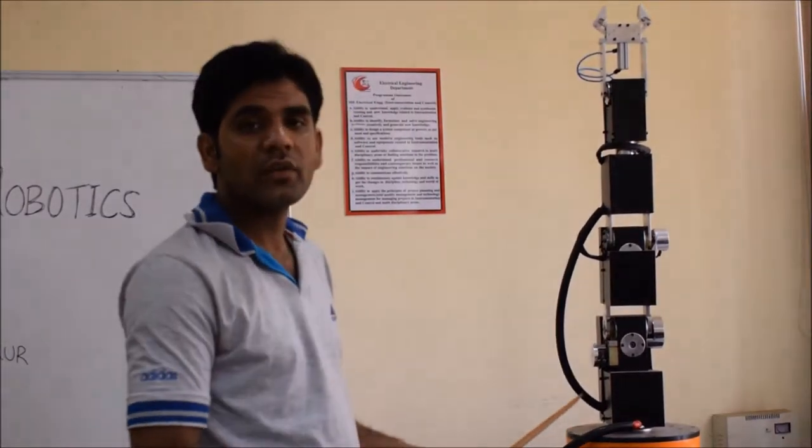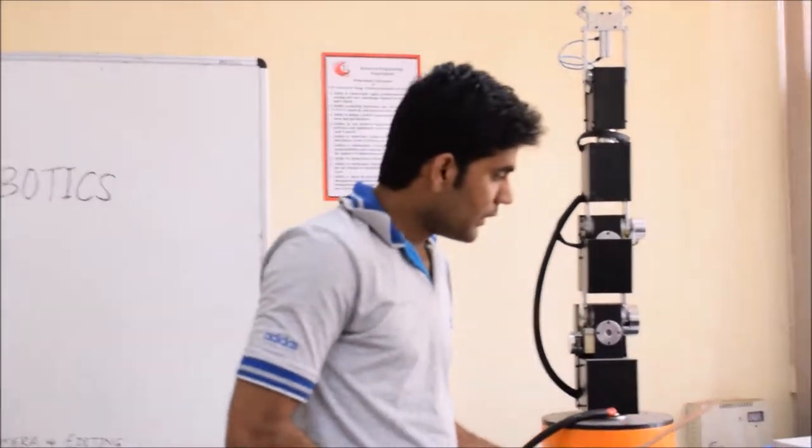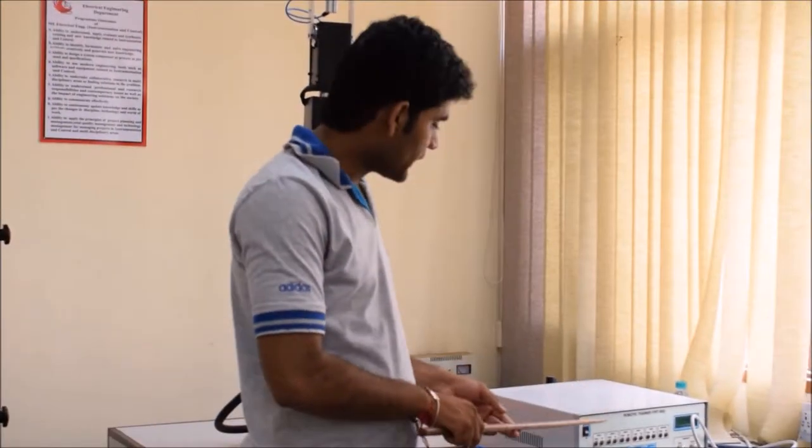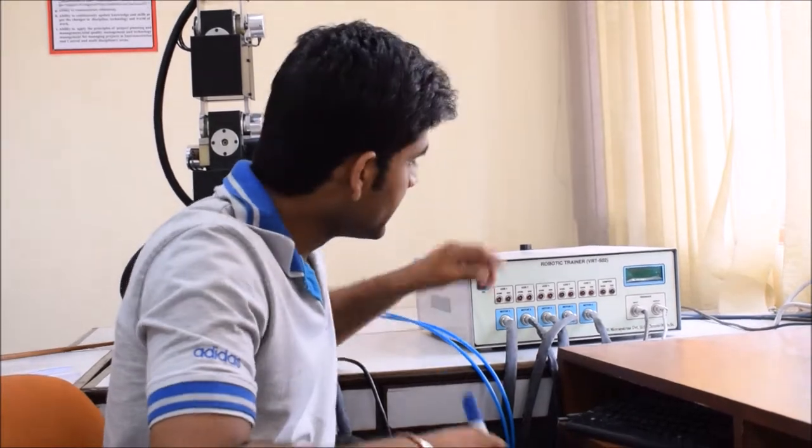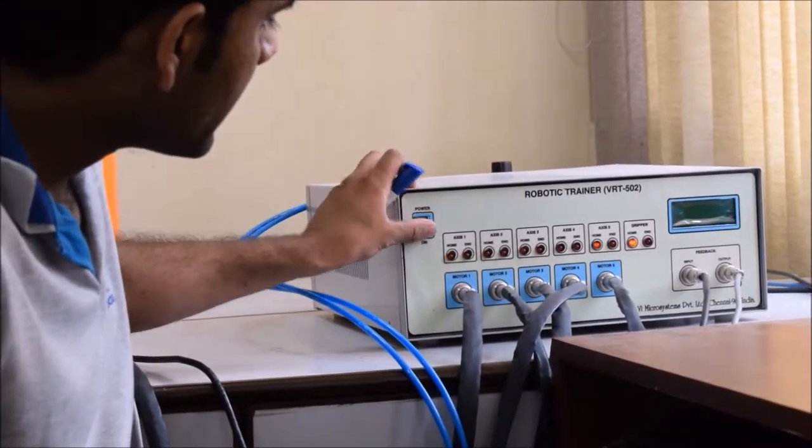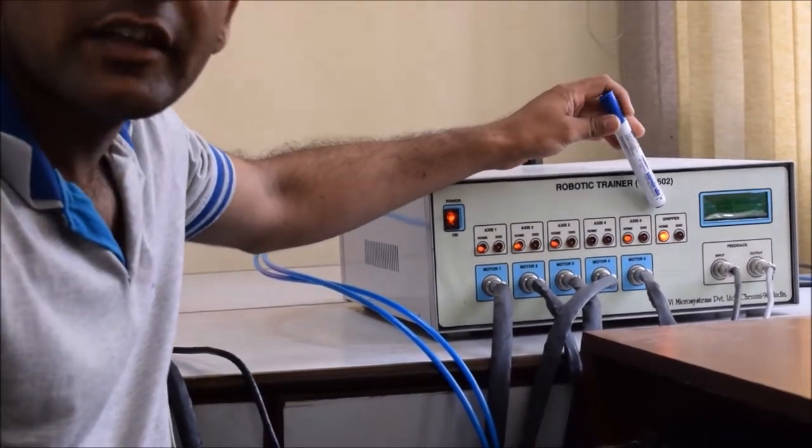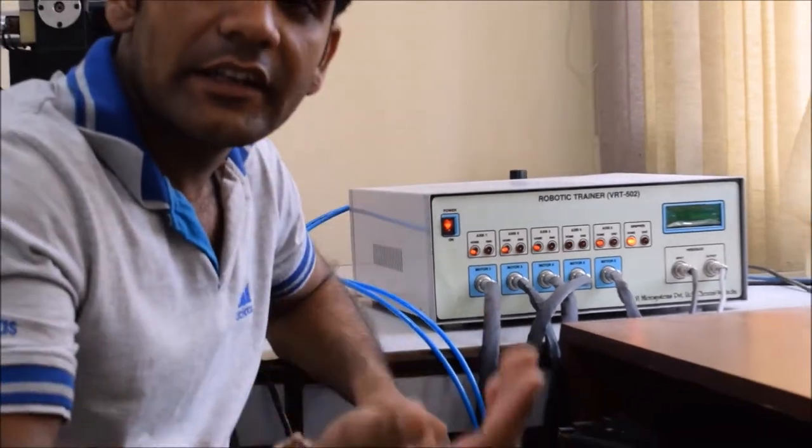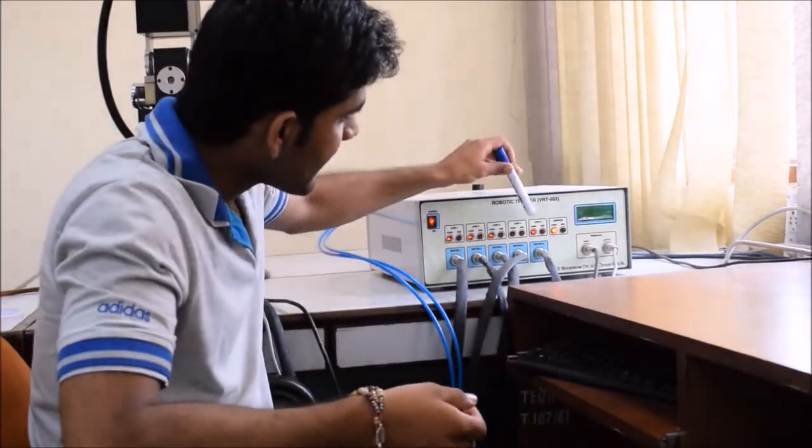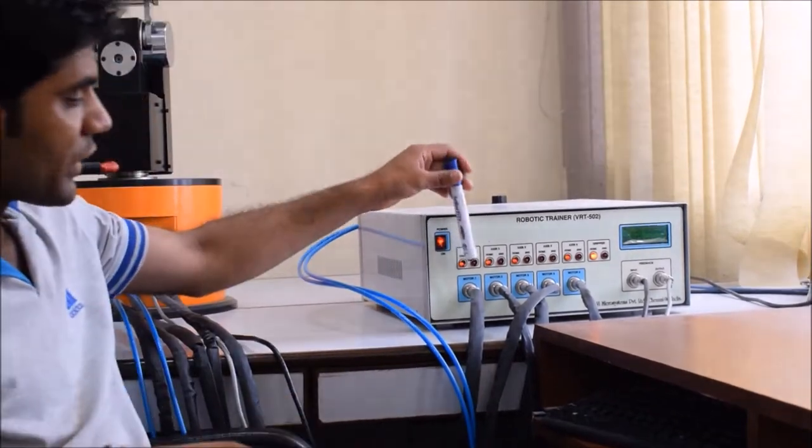So, it is the robotic arm. Now, we go for the robotic trainer. This is our robotic trainer, this is our trainer kit. In this kit, there are some indicators for the different type of axis. There are indicators: axis one, two and then there are five axis. This is the gripper axis. You can see where gripper is activated or not. Which axis is activated, the indicator will be on.